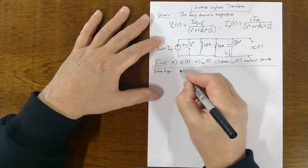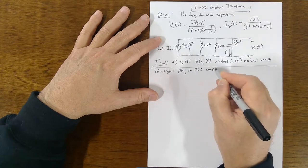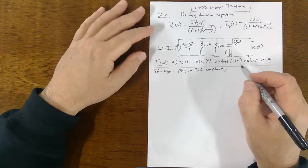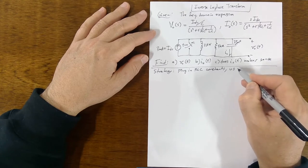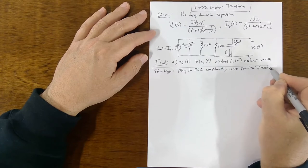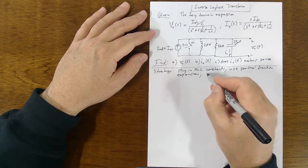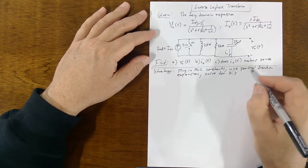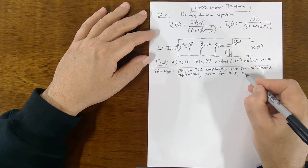The strategy is: we're going to plug in the RLC constants. Once we do that, we're stuck with those constants — we can't change them. We'll end up with an algebraic expression that we'll have to use partial fraction expansion to tease apart. Then we solve for the constants in the partial fraction expansion, and once we have that, we transform back to time domain.